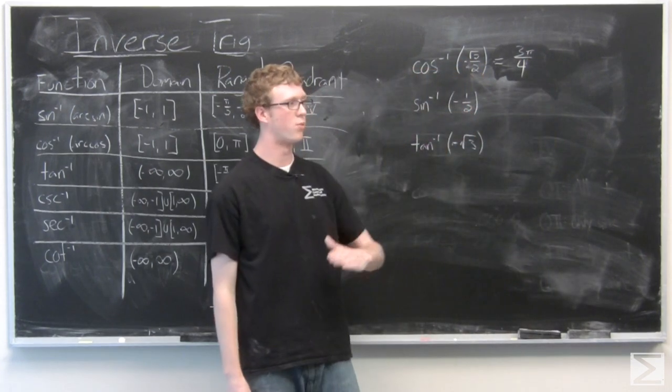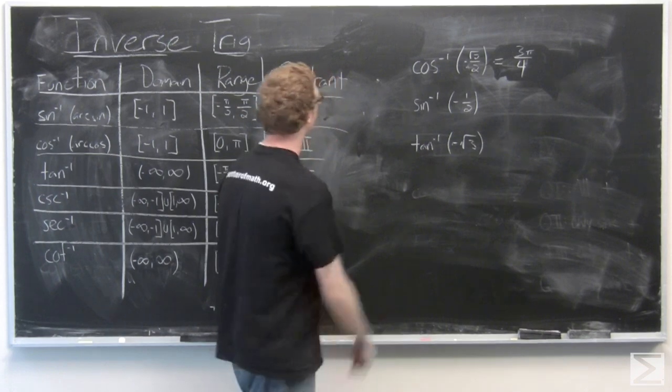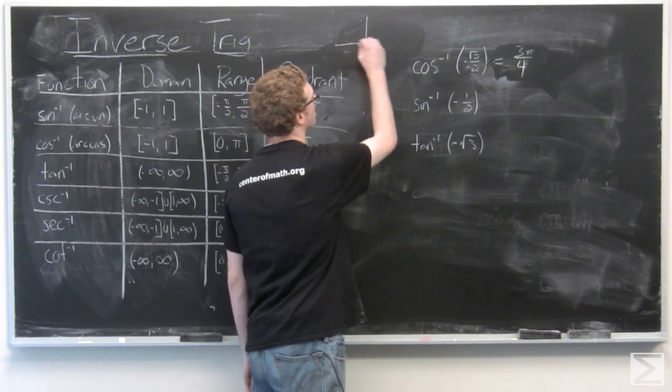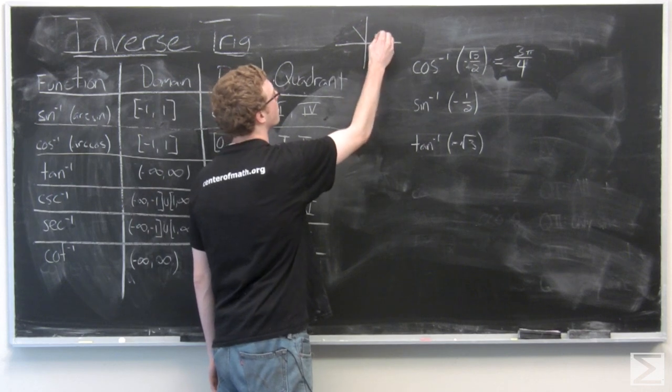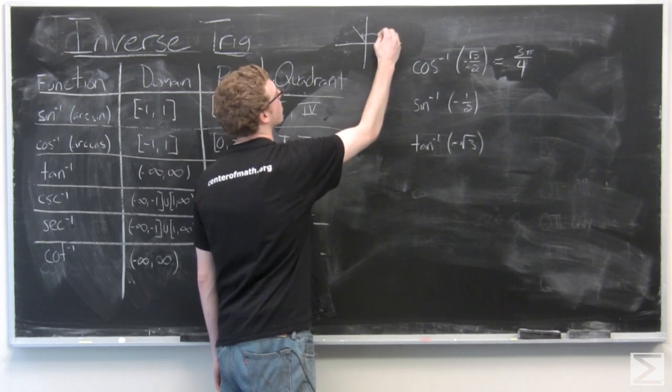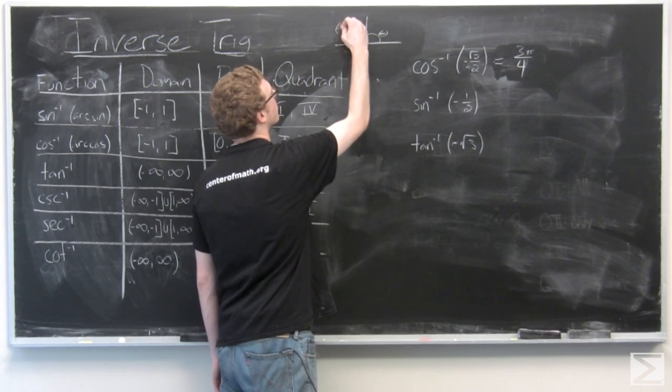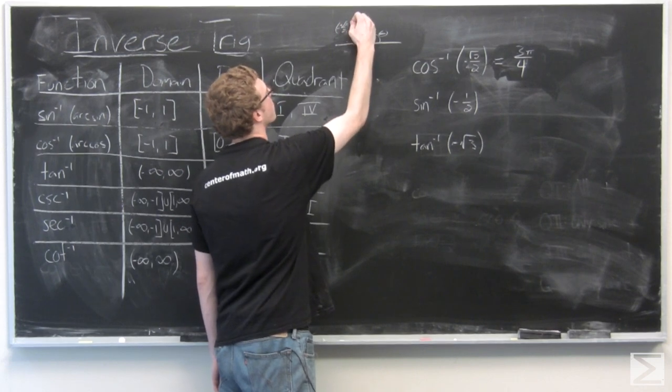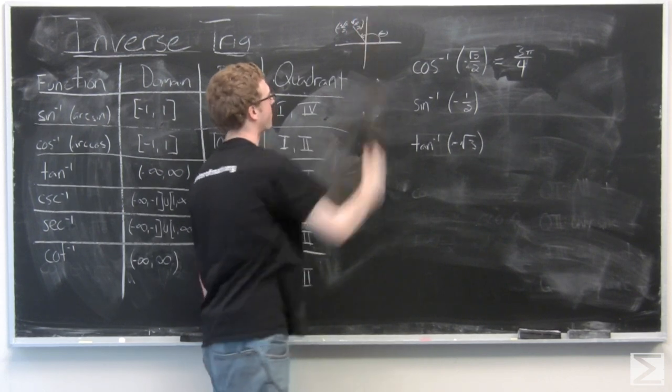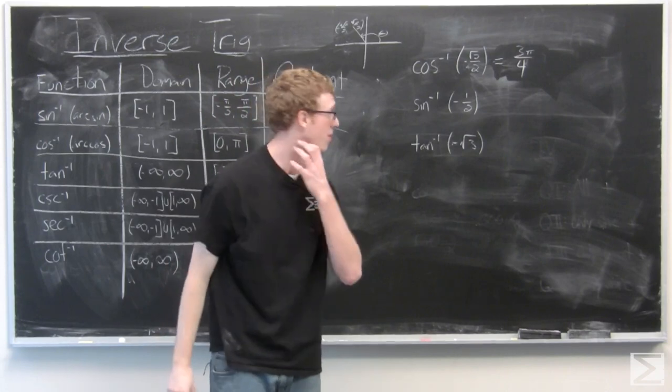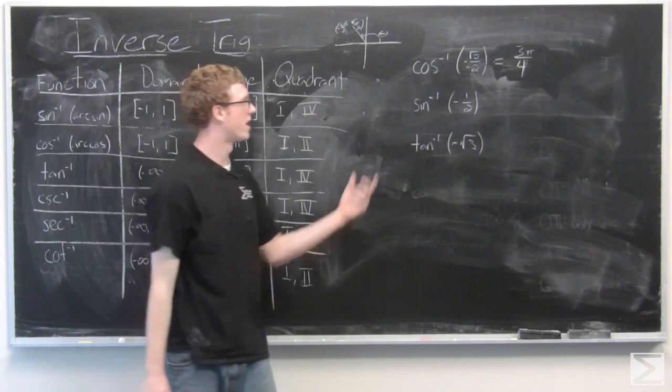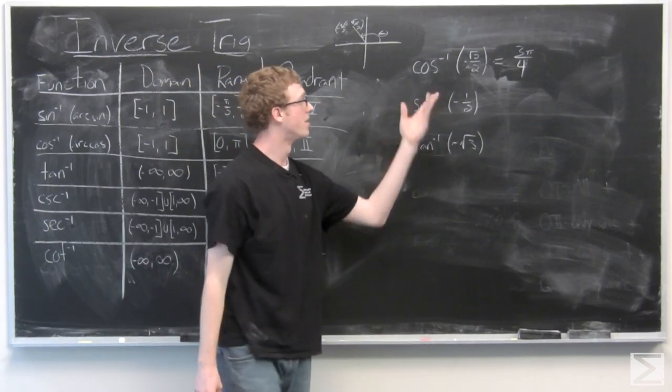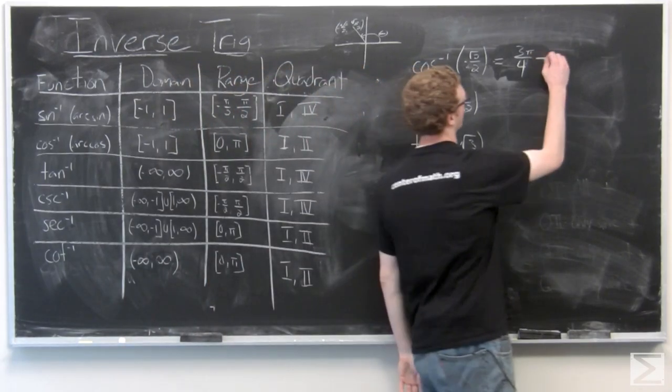And that corresponds to the 135 degree angle. If we're measuring from the positive x axis that corresponds to this angle. So go ahead and remember that that is a unit circle value and inverse cosine of negative root 2 over 2 is 3π over 4 or 135 degrees.